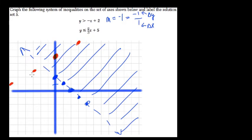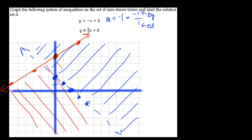Okay, so y is less than or equal to. So now we shade this line in, because it's less than or equal to. So we can include the line. And we're shading below this region here. Everything below it.